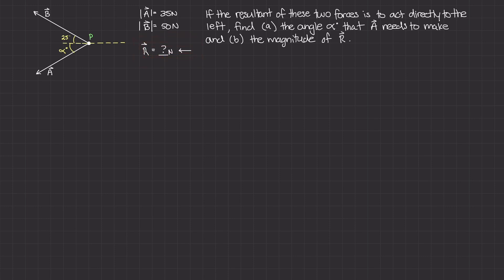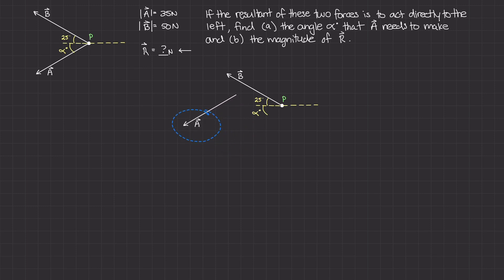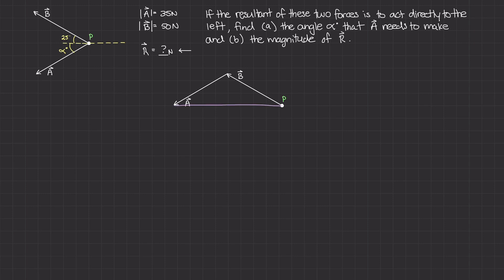Just like in the last example, I'm going to use some trigonometric laws to figure out what angle alpha is. But first, we need to create a triangle. We need to add A plus B, or B plus A — it doesn't matter which way. To make things a little bit easier to form the triangle, I'm going to add B plus A. What that allows me to do is take this vector A and move it to the tip of B. From this, you can see that the resultant force is going to act directly to the left.